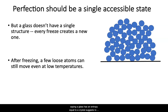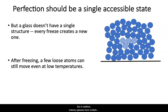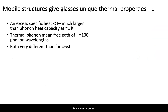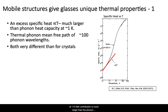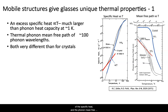Saying a glass has an entropy equal to a crystal suggests that it has only one structural state, which ordinary glasses don't have in any normal sense — every time you freeze a glass, you get a different one. In addition, ordinary glasses have multiple accessible states so that after freezing, a few atoms can still move even at very low temperatures. These mobile states give glasses a unique set of low-temperature properties: a specific heat proportional to temperature. At 1 K, that contribution is much larger than the phonon specific heat. There is also phonon scattering that limits the phonon mean free path to about 100 phonon wavelengths. Both are very different than that observed for crystals, where phonons account for all the specific heat and the phonon mean free path is limited only by the crystal size.